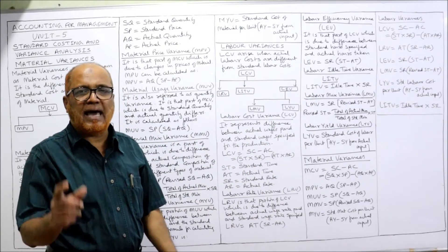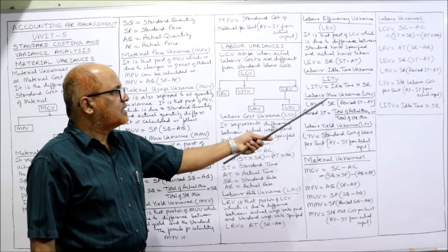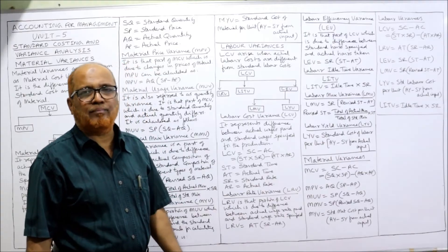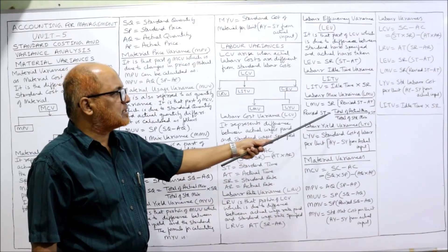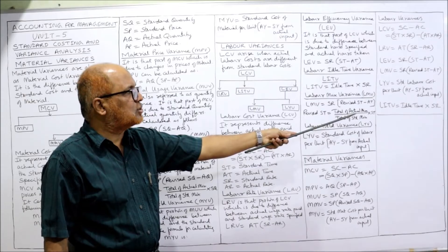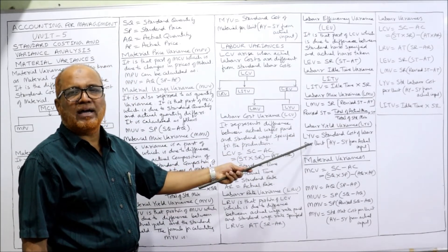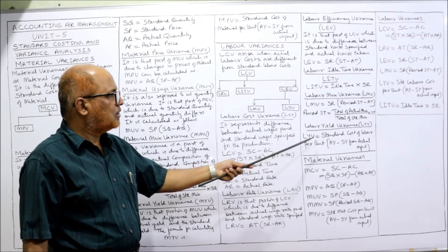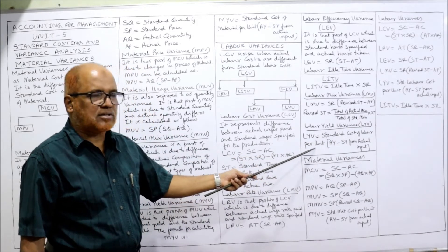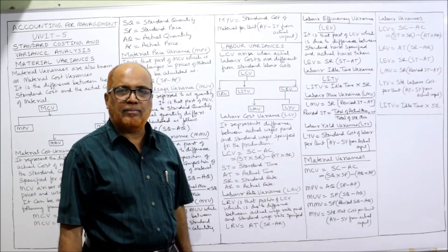Labor mix variance, LMV. Formula: LMV = SR × (Revised Standard Time − AT), where Revised Standard Time = (Total of Actual Mix ÷ Total of Standard Mix) × Standard Time. Labor yield variance, LYV. Formula: LYV = Standard Cost of Labor per Unit × (Actual Yield − Standard Yield from Actual Input).